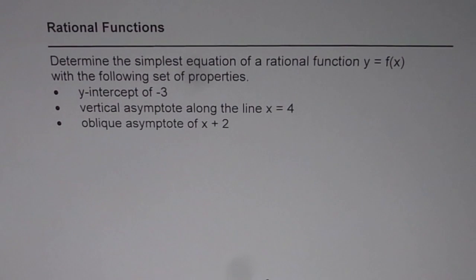Determine the simplest equation of a rational function y = f(x) with the following set of properties: y-intercept of -3, vertical asymptote along the line x = 4, oblique asymptote of x + 2.